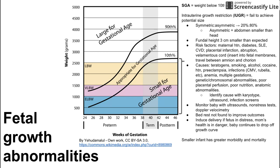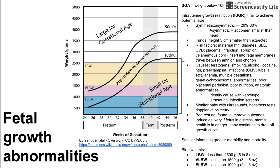In general, a smaller infant has greater morbidity and mortality — there is a correlation between smaller babies and worse outcomes. Some terms applied to a baby once born include birth weight categories: low birth weight is less than 2,500 grams, very low birth weight is less than 1,500 grams, and extremely low birth weight is less than 1,000 grams.